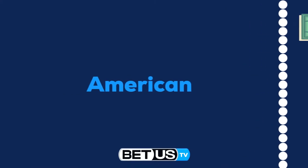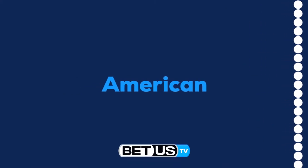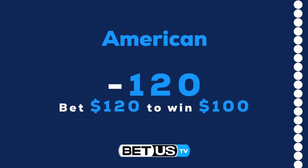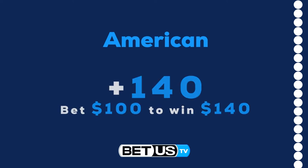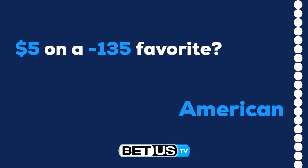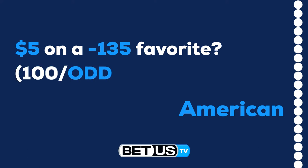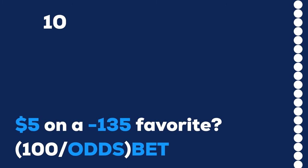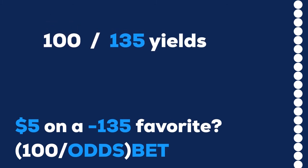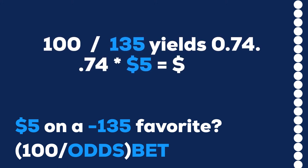Determining payout on American odds is a little more complicated. Minus 120 means betting $120 would win $100, while plus 140 would win $140 on a $100 bet. But what if you want to determine a payout on a smaller bet? Let's say you bet $5 on a minus 135 favorite. The formula is this: divide 100 by the odds number without the minus, and then multiply that by your bet. So 100 divided by 135 yields .74, then you take .74 times your $5 bet to arrive at the profit of $3.70. Betting on an underdog is just as easy — multiply your wager by the odds to the 100 place. Plus 150 would be 1.5, and you would have your profit.